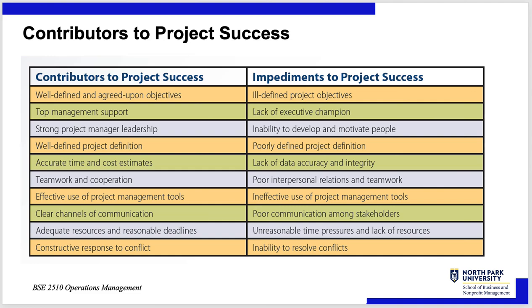A well-defined project definition is a contributor; a poorly defined, fuzzy project definition leads to scope creep and people not being clear on their objectives. Accurate time and cost estimates — as accurate as you can be at the beginning when you don't know everything — are important. If you don't have accurate estimates up front, your project may stall because you might run out of time and money, and other managers might pull their people out if the project runs twice as long as planned. Planning and estimating — the best you can do — are critical.